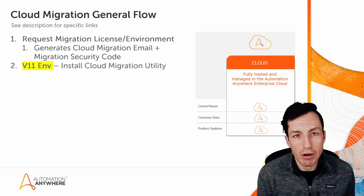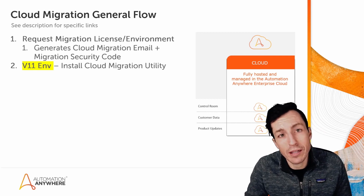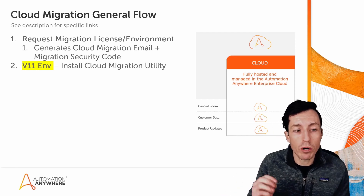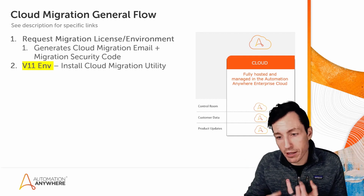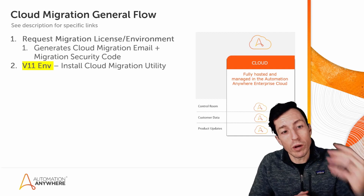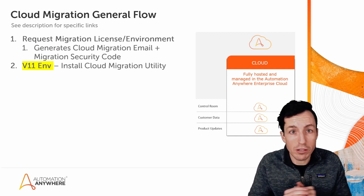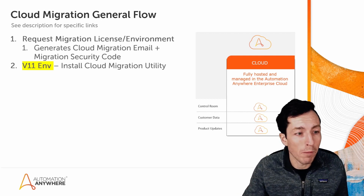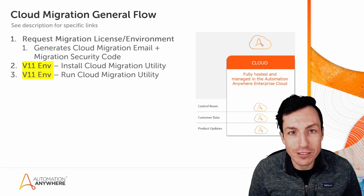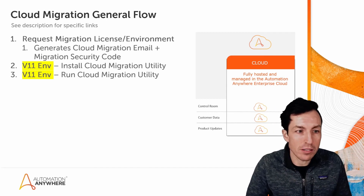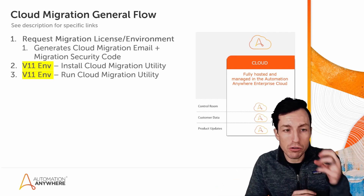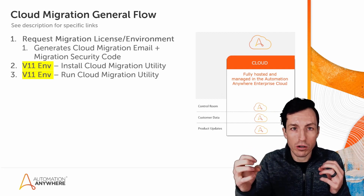The next part is installing the cloud migration utility, which is unique to cloud migrations. With an on-prem migration you have to manually do the database backup, grab the dat file for the credential vault, get all files from the repository, and move everything over. With the cloud migration utility, it does all of that for you. The security code from the migration email will tie your execution of the cloud migration utility to your target A360 environment.